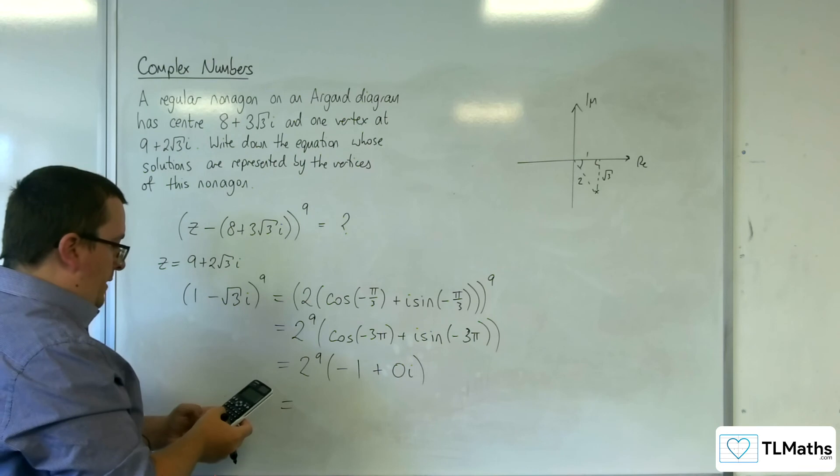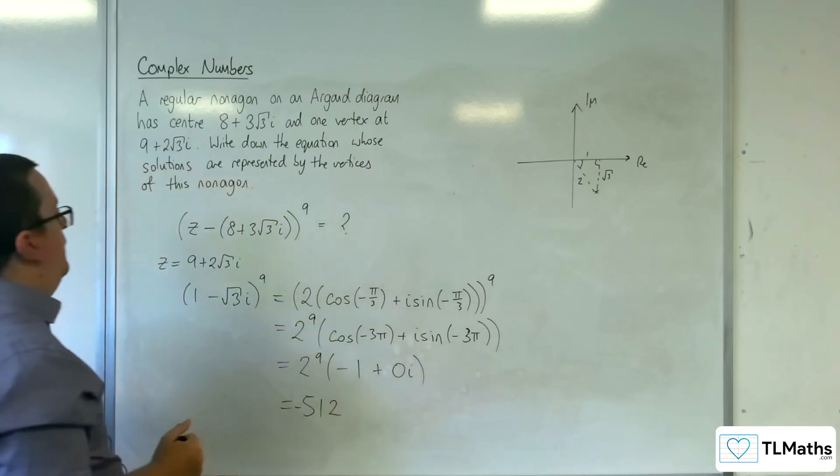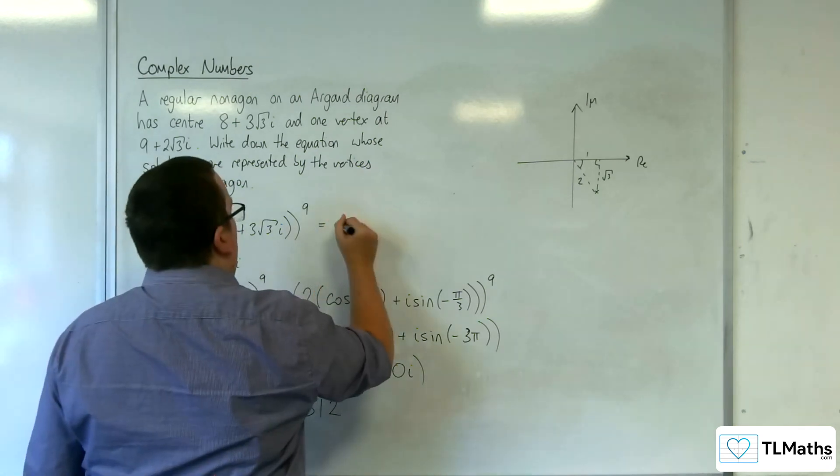So 2^9 is 512, so this is -512, and that's my question mark.